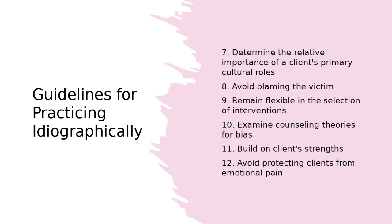Determine the relative importance of a client's primary cultural roles. At different times in your work with the client, certain roles may have more importance. For example, in certain situations my identity as a disabled person takes the forefront, and issues of race or ethnicity recede. Depending on the issue and the time you're working with the client, certain roles may come to the forefront while others fade into the background, and the level of importance of those roles may change.